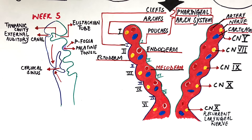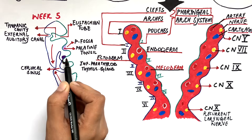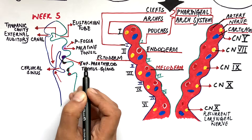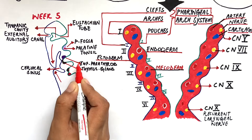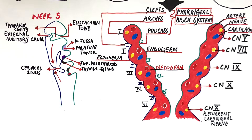The third pouch expands dorsally and ventrally into two compartments. Its dorsal component will give rise to the inferior parathyroid gland, and its ventral component will join its anatomical counterpart forming the thymus gland.